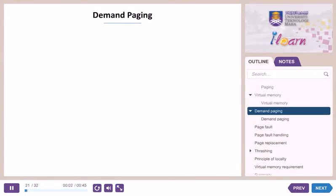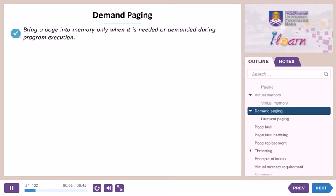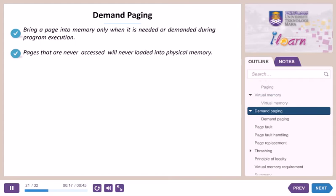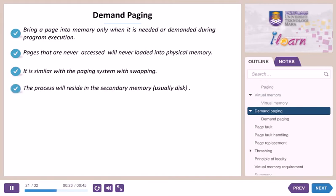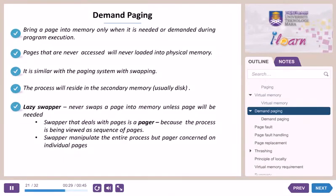Demand paging. Virtual memory can be implemented using demand paging or demand segmentation. Demand paging allows a page to be brought into memory only when it is needed or demanded during program execution. Pages that are never accessed will never be loaded into physical memory. It is similar to a paging system with swapping — the process resides in secondary memory, usually disk. A lazy swapper never swaps a page into memory unless the page is needed. A swapper that deals with pages is called a pager. Swapper manipulates the entire process, but a pager is concerned with individual pages.